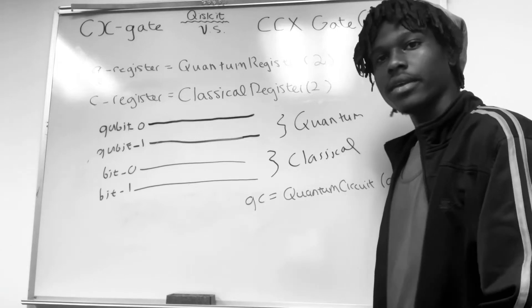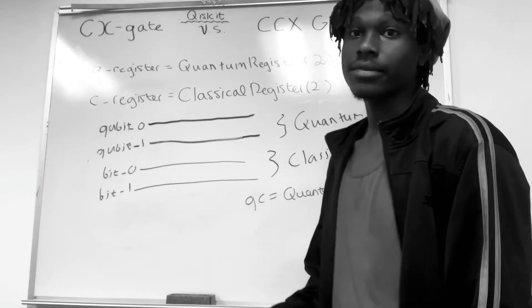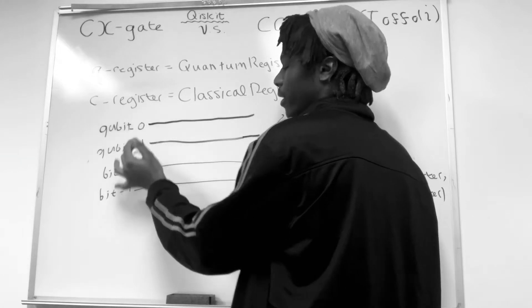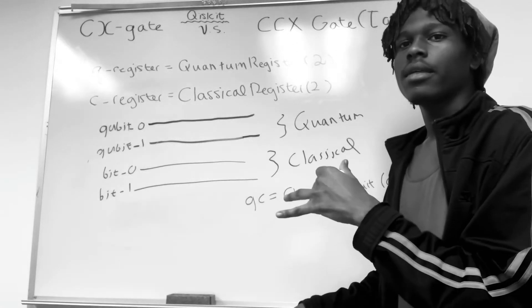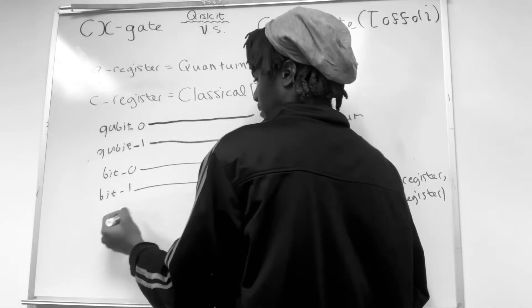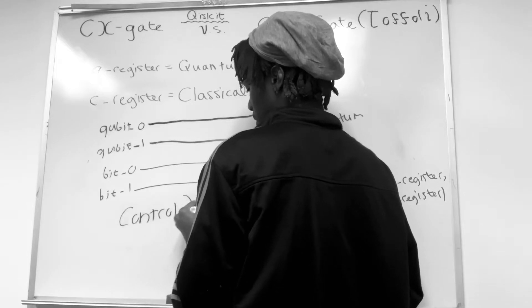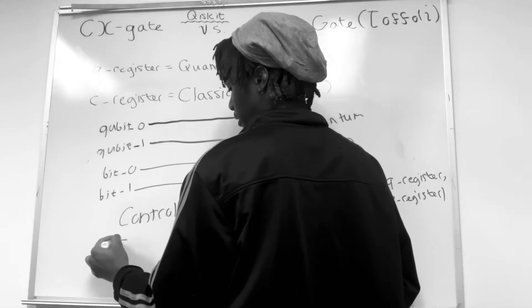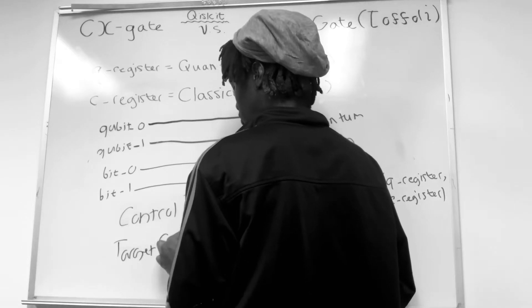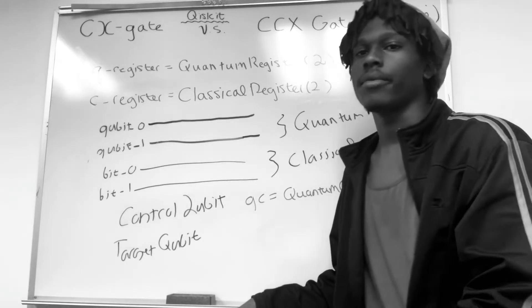So you can think about it like this. I only go to the store if it's not raining. So if it's not raining, I go to the store. If my control qubit is one, I flip the target qubit. So basically, I'm going to have a control qubit and a target qubit. The control basically is what we use to determine whether or not we're going to do our operation.